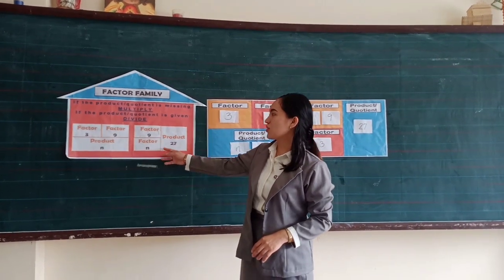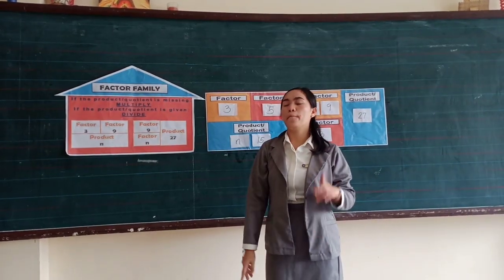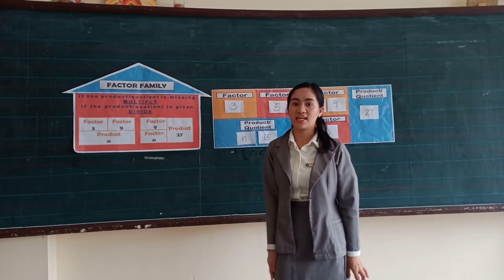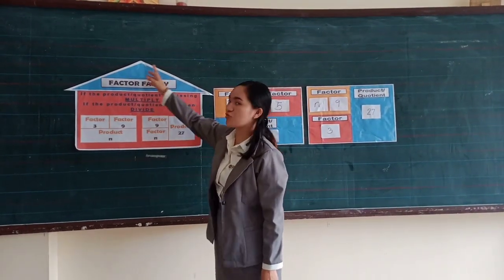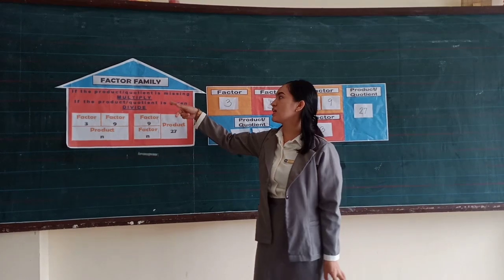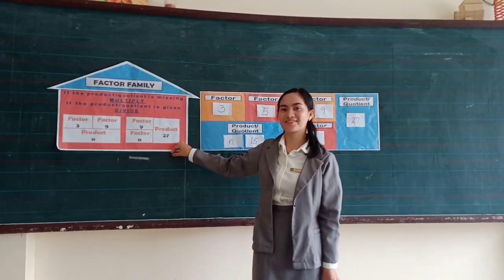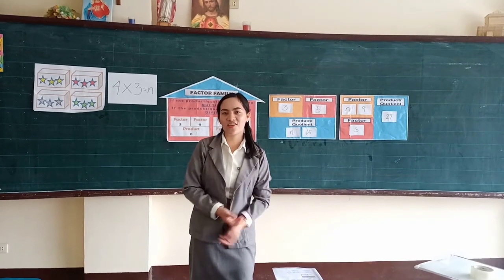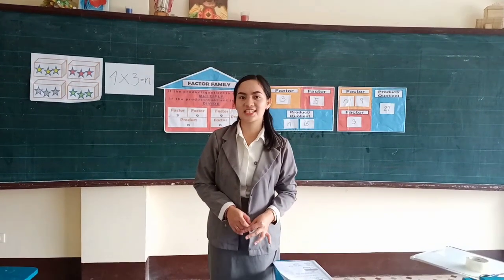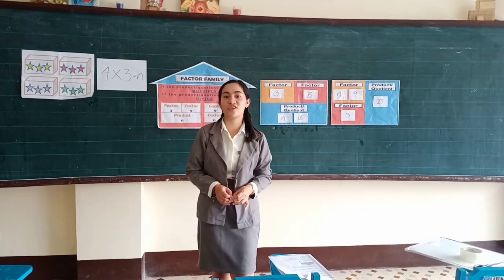Okay class, what do we do if the product or the quotient is missing? Very good, we have to multiply. And what if the product or the quotient is given? Yes, we have to divide. So, class, you have to remember these two rules in the factor family in order to get the value of N. Did you understand our lesson today, class? Yes, teacher. Is there any questions? None. Okay, if none, that's the end of our lesson today. Thank you for your active participation.